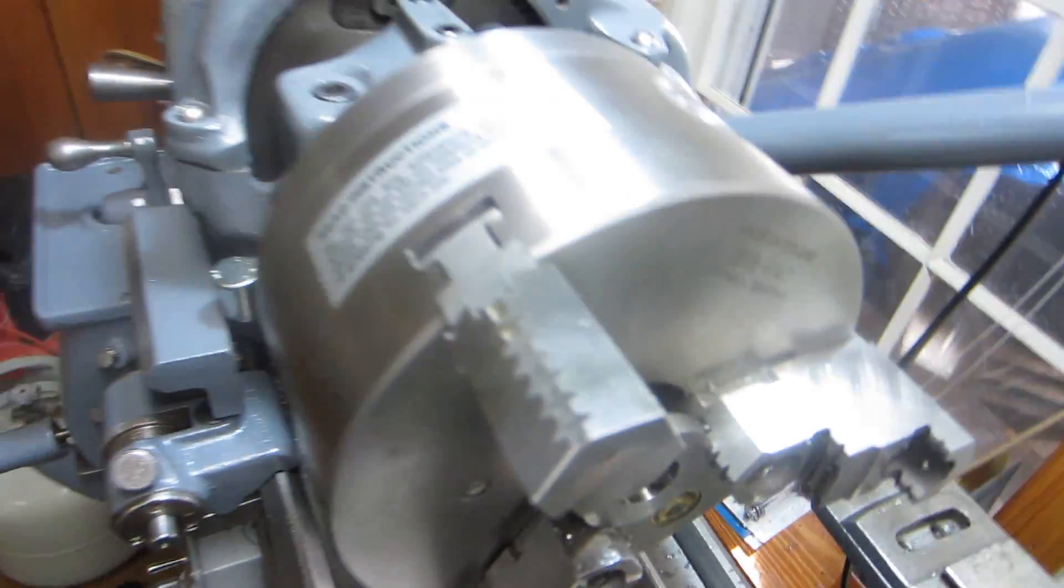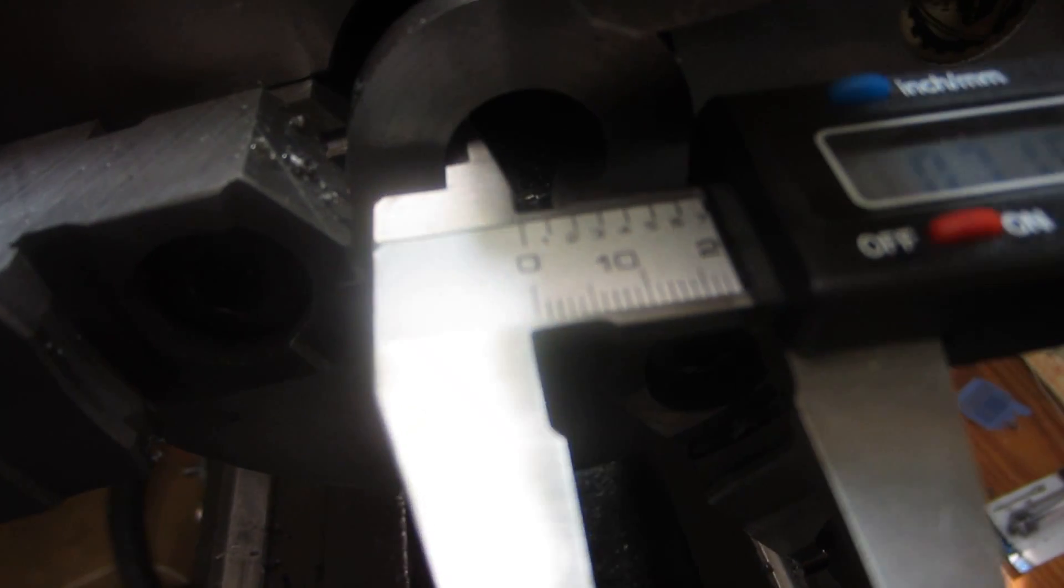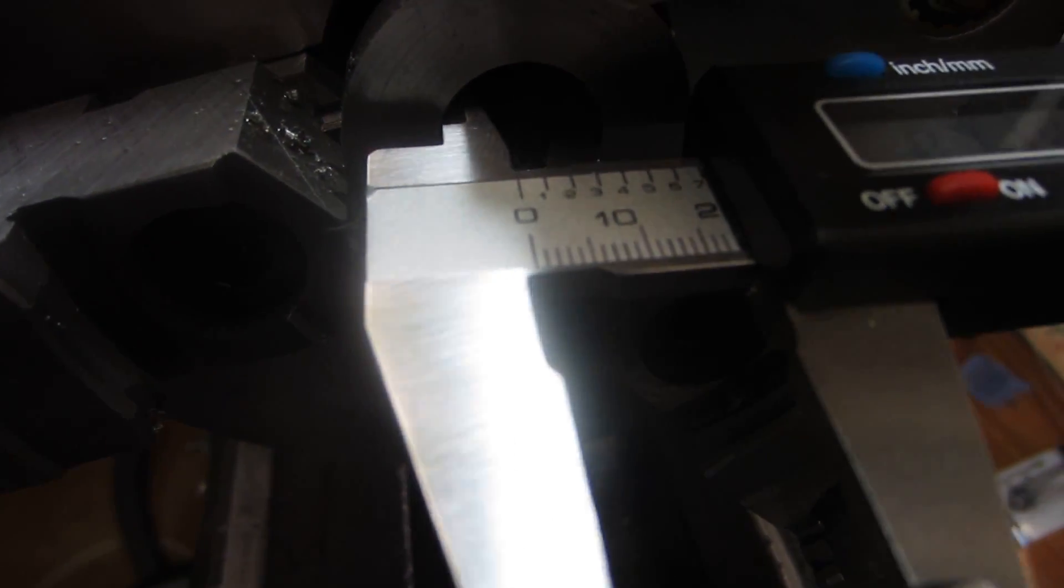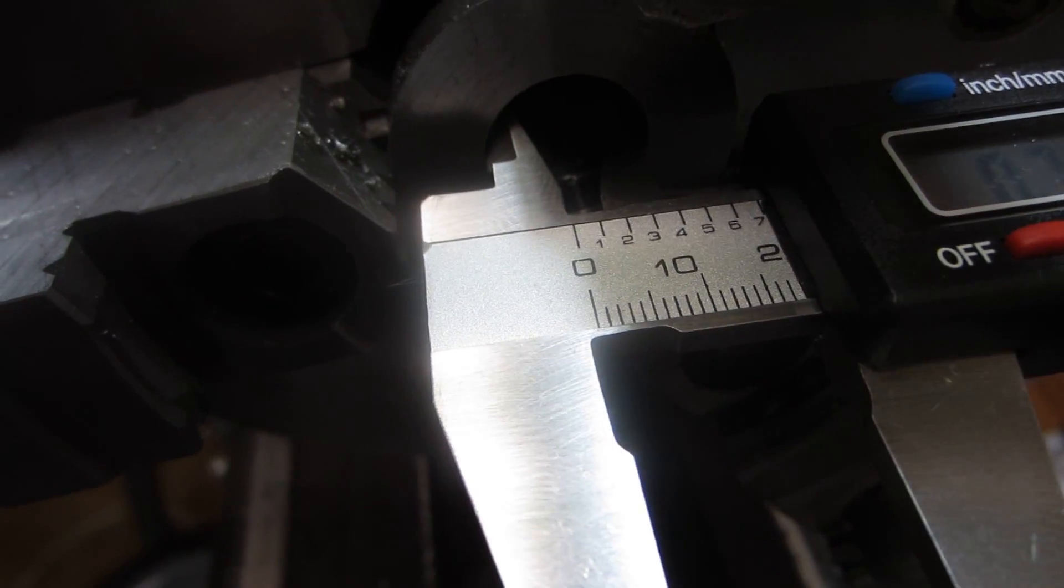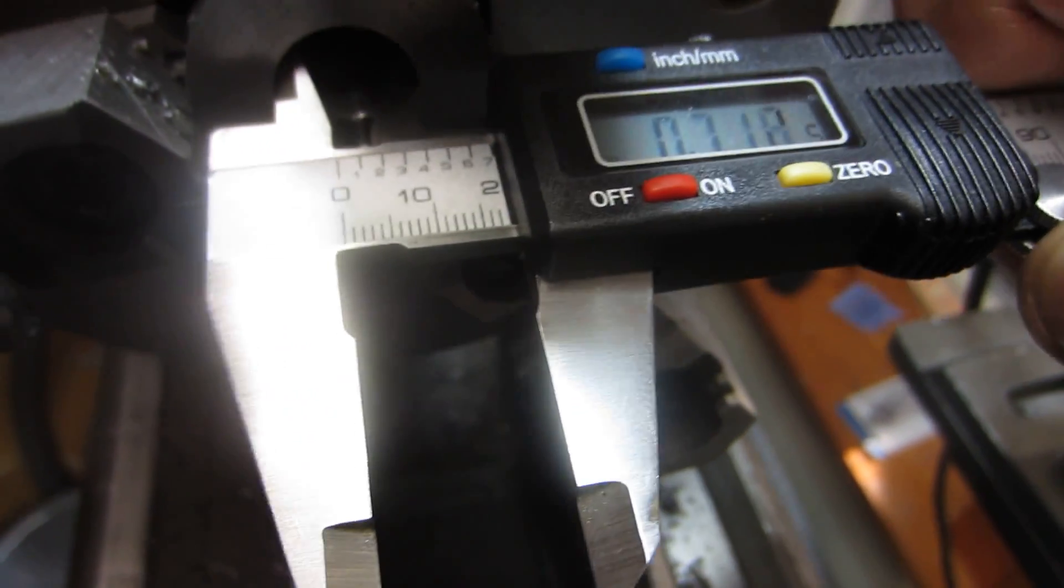Give it a check. I can't remember what I said I was supposed to be at right now. 72 wasn't it? 70. Let's see. This isn't the most accurate way of measuring obviously. Should have an inside gauge. But we're at about 71.